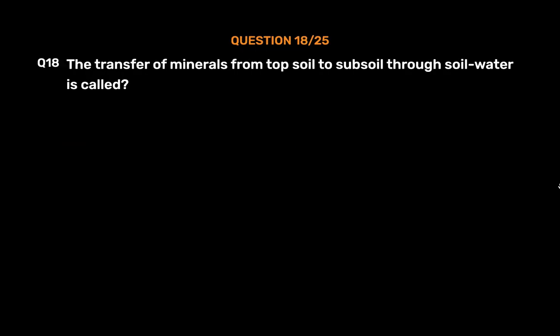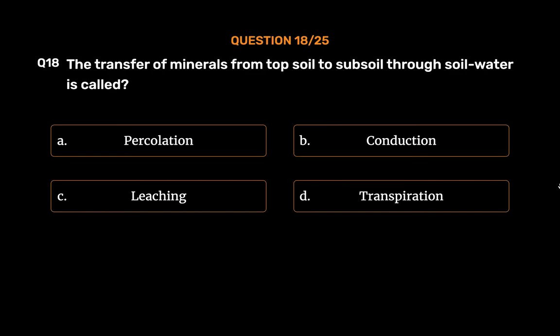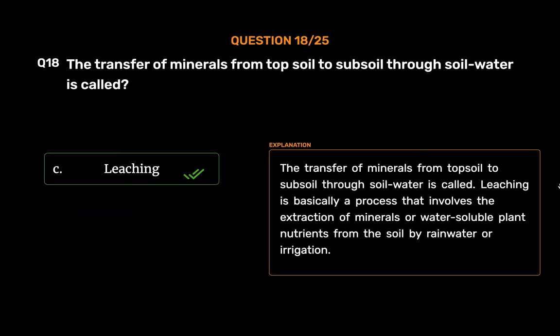Question No. 18. The transfer of minerals from top soil to subsoil through soil water is called _____. The correct answer is Option C: Leaching. The transfer of minerals from top soil to subsoil through soil water is called leaching. Leaching is basically a process that involves the extraction of minerals or water-soluble plant nutrients from the soil by rainwater or irrigation.